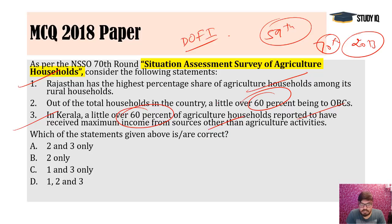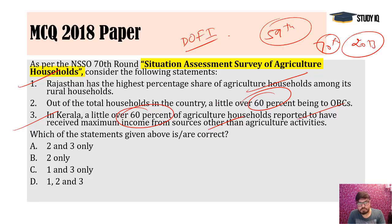How much importance you give to official information was being checked by UPSC. This was one of the toughest questions that year, which is why the cutoff went below 100 — 98 was the cutoff. This five-star question, meaning maximum toughness level, was actually simple if you knew the approach: you must know the highlights of important agricultural reports.